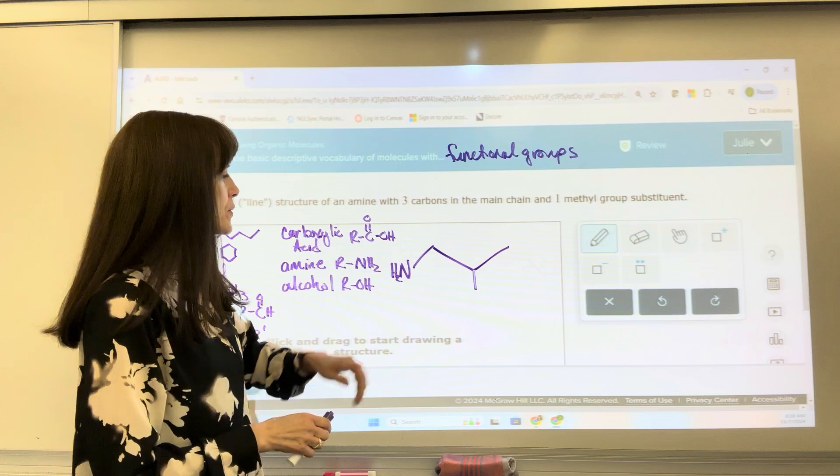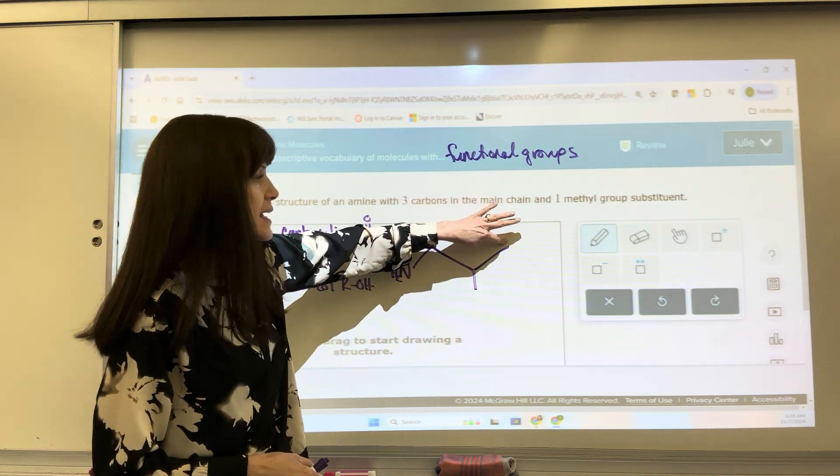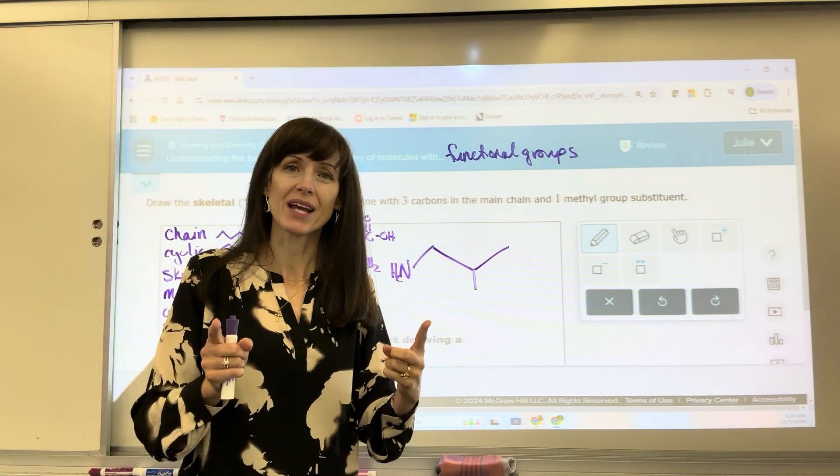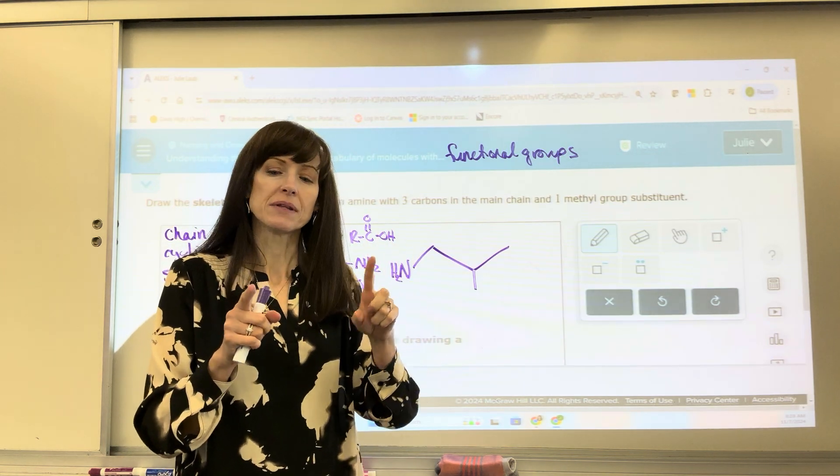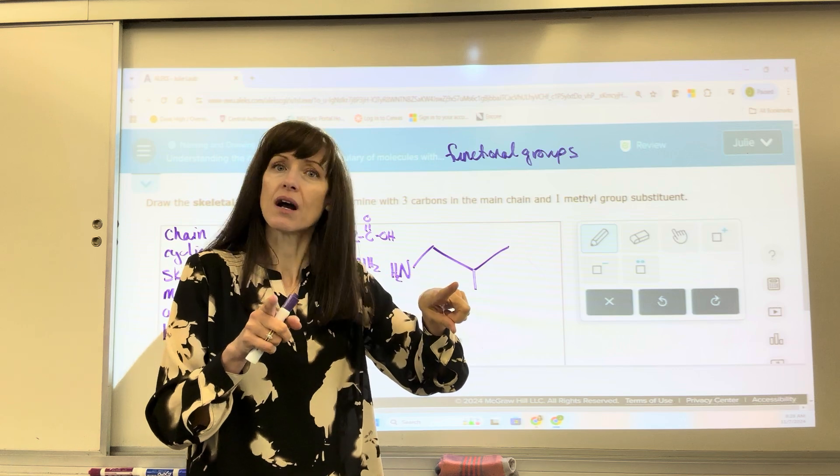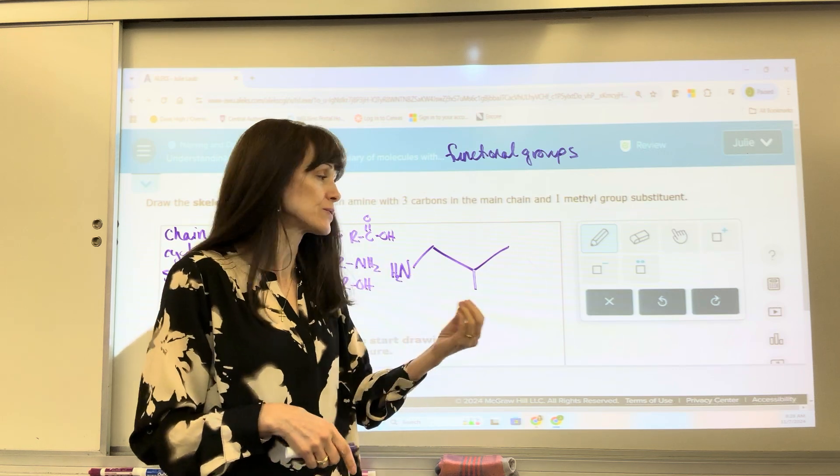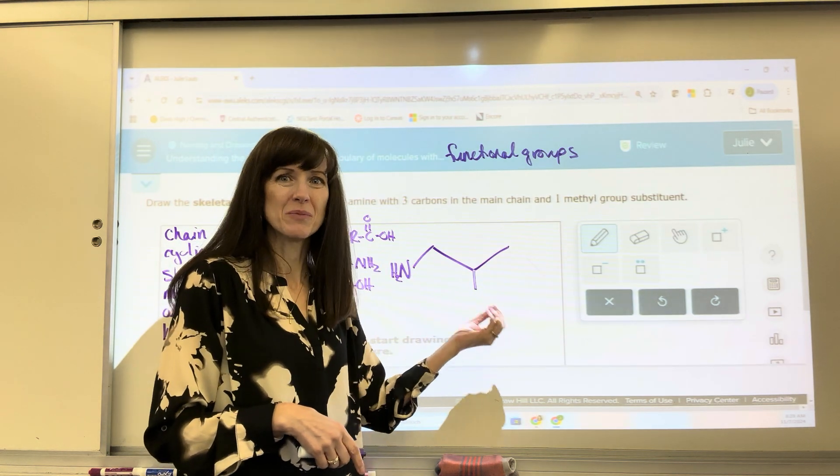If I put the methyl group on this end or on this end, it would change my chain from three carbons to four. Because remember, a chain is going to be the longest continuous string of carbons. A substituent is going to be somewhere in the middle, somewhere in the middle.